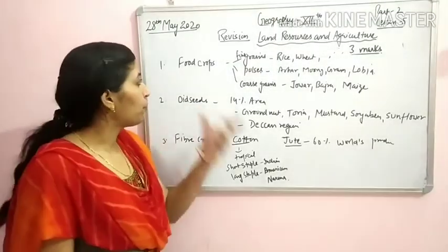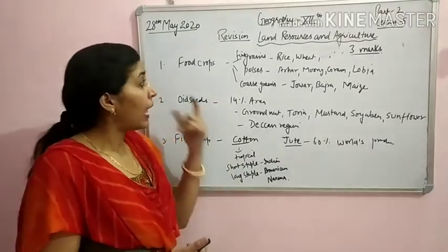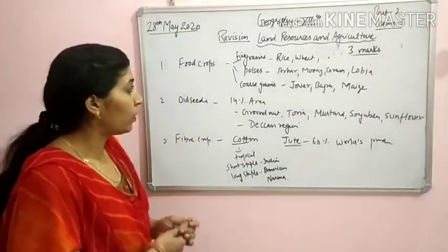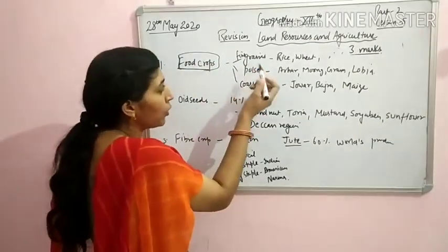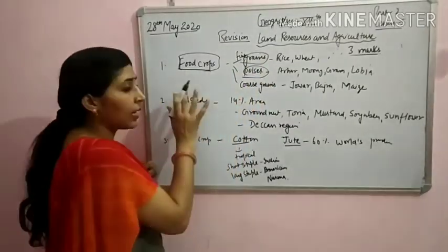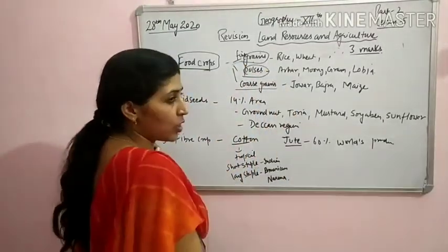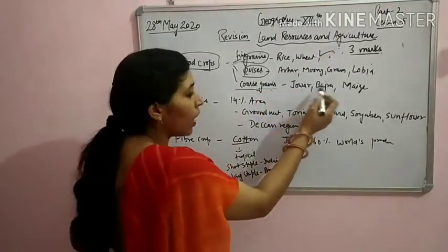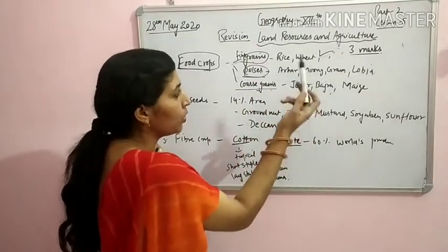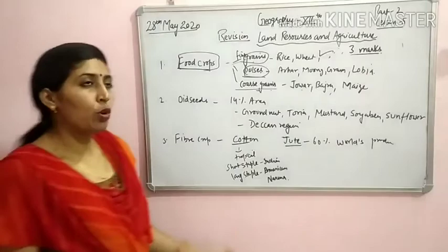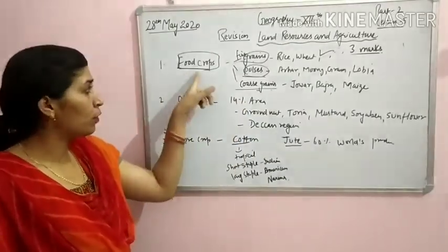Next three-mark question: food crops classification. Food crops have two parts — grains and pulses. Grains are further divided into fine grains and coarse grains. Fine grains include rice and wheat. Coarse grains include jowar, bajra, and maize. Different types of pulses include arhar, moong, gram, and lobia. So these are the classifications of food crops.